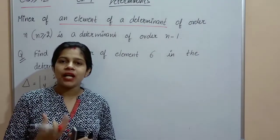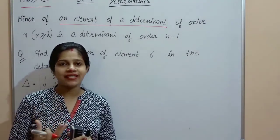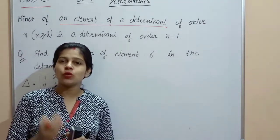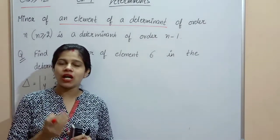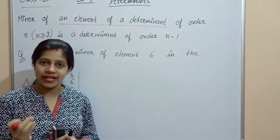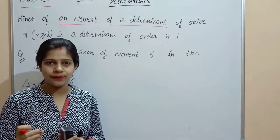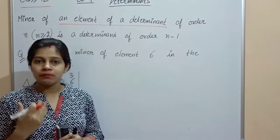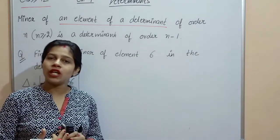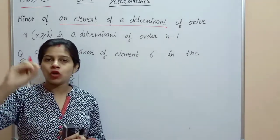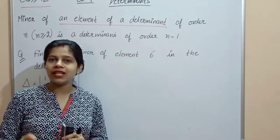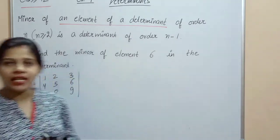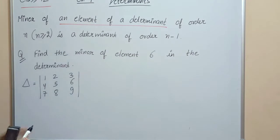So here is an important note: if you find the minor of any element in a determinant of order n, then the resulting determinant will be of order n−1, because we delete one row and one column. This means the determinant must have order n ≥ 2 for minors to be defined.